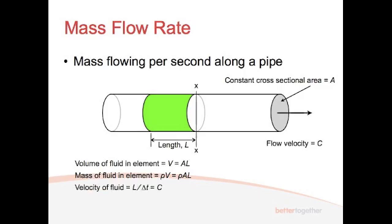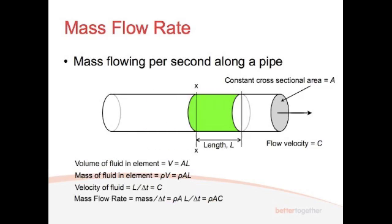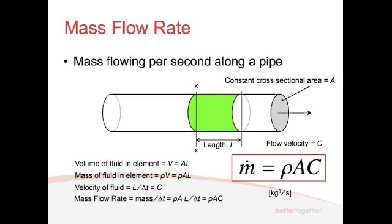As before, the fluid in the pipe is going at velocity C, which we know is L divided by delta T. So when the fluid moves that volume past XX over distance L, we can work out the mass flow rate. That's the mass divided by delta T, which is rho·A·L divided by delta T. And since L divided by delta T equals C, you end up with the mass flow rate being density times A times C. We know that A times C is the volumetric flow rate, so you could write: mass flow rate equals density times volumetric flow rate.